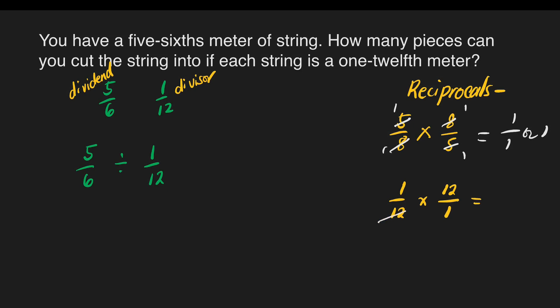We can cancel — that's 1 times 1 is 1, 1 times 1 is 1. So it means the reciprocal of the divisor 1/12 is 12/1. So we'll put 12/1, then change the division sign to multiplication sign, and copy 5/6.